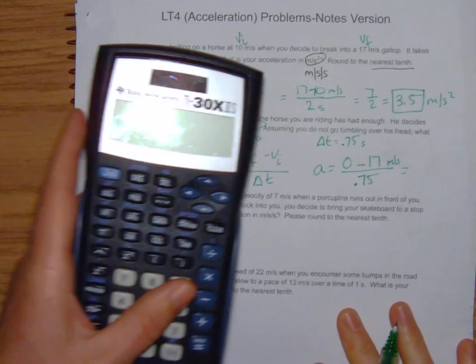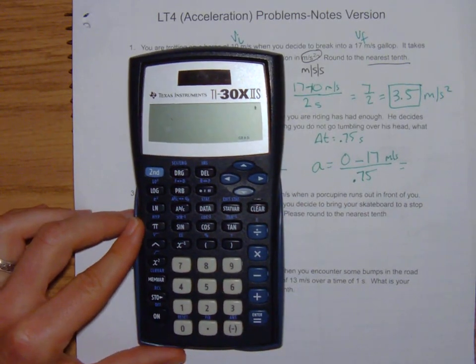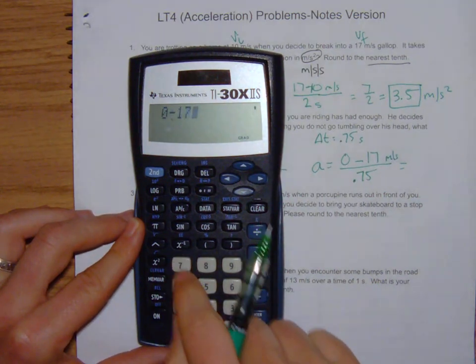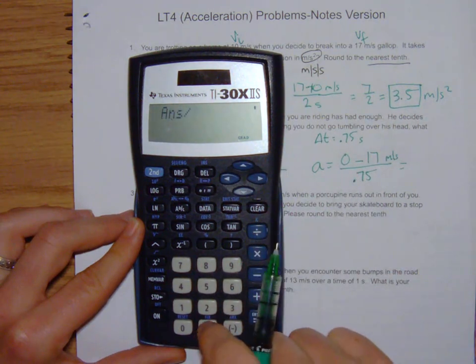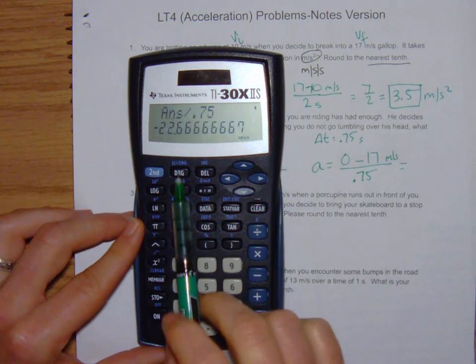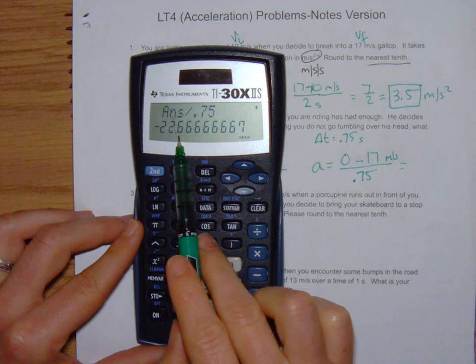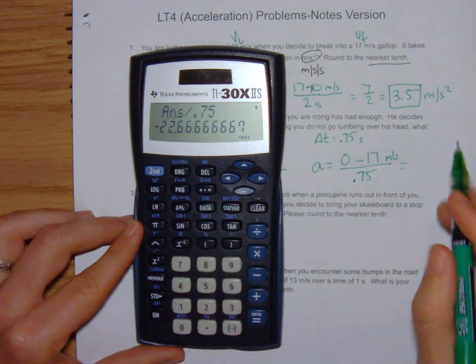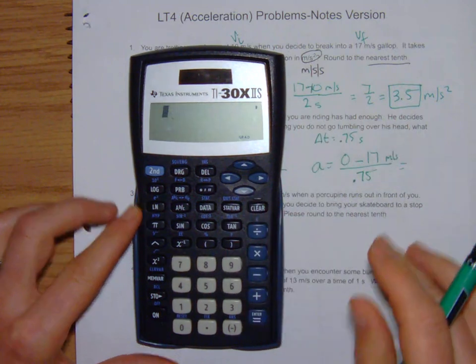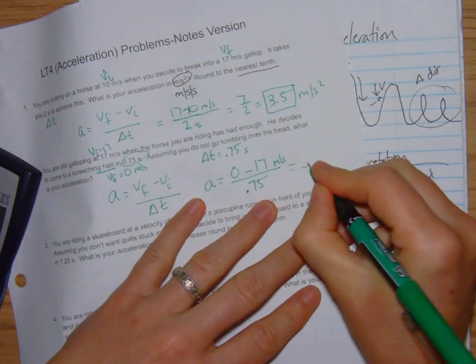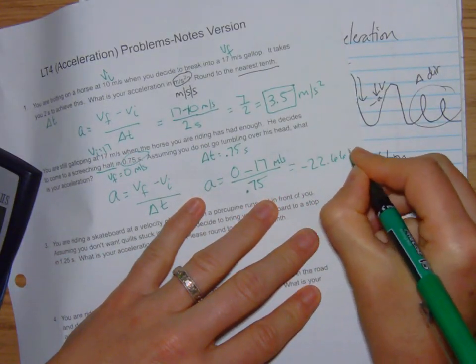So 0 minus 17 gives us a negative 17. That's important. We divide that by 0.75 and we get this negative 22.6 and 6 is repeating. Remember we need the tenth.